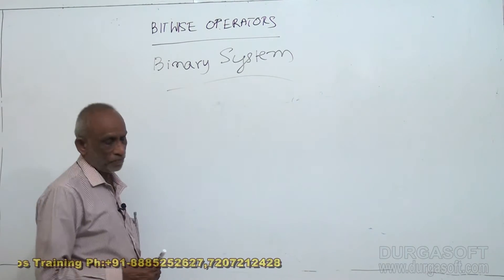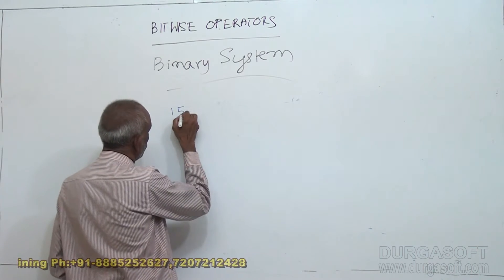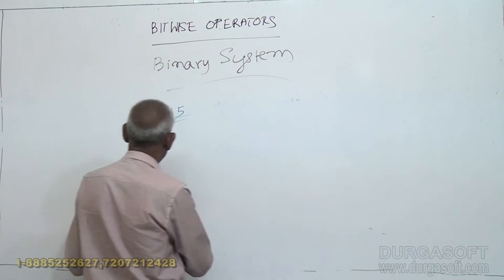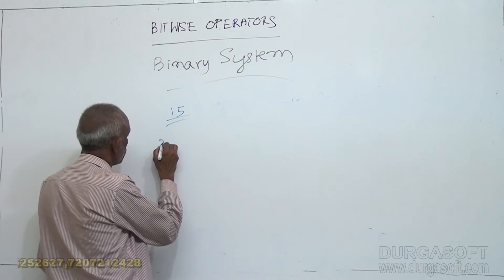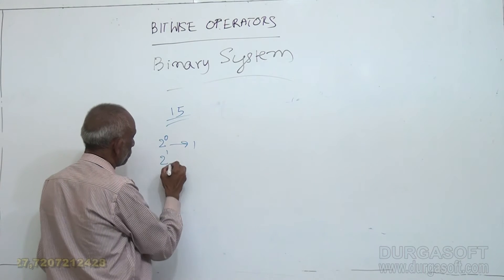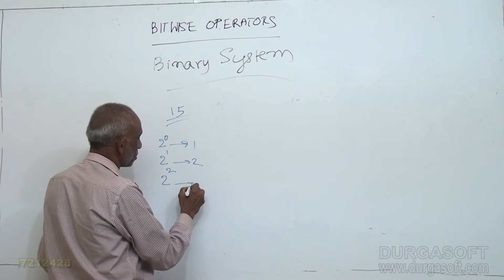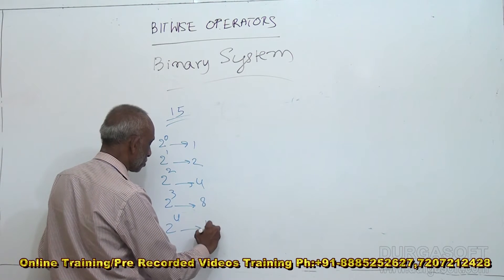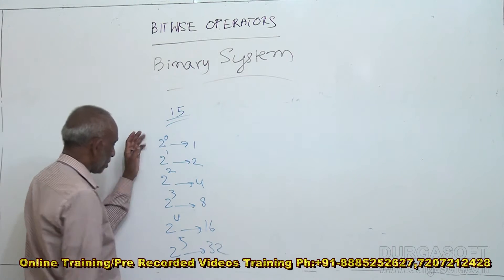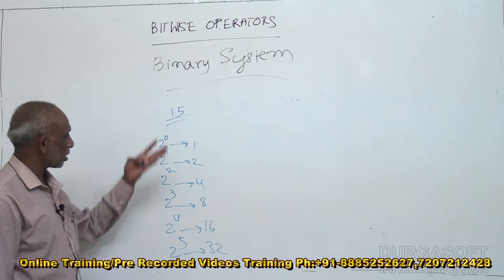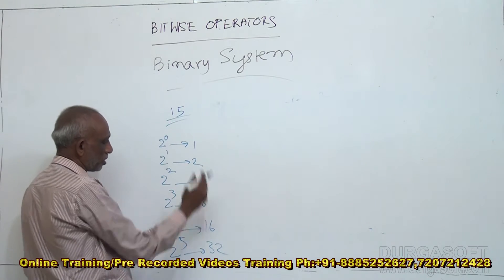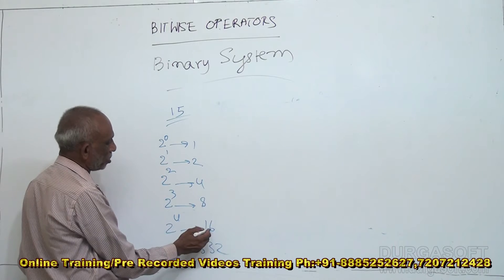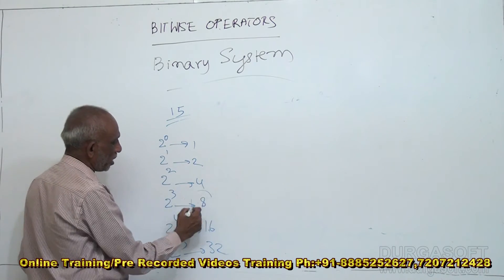Now let us do the reverse. Suppose I have the decimal number 15. How do we convert it to binary? Let us have a useful reference: 2 power 0 is 1, 2 power 1 is 2, 2 squared is 4, 2 cubed is 8, 2 power 4 is 16, 2 power 5 is 32. Now for 15, the highest power is 8. After 8 it is 16, which is greater than 15, so let us take 8 first. 8 is there, so let us write 1, and subtract 8 from 15, which gives 7.